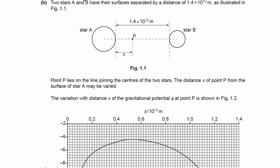Part B. Two stars, A and B, have their surfaces separated by a distance of 1.4 times 10 to the 12, as shown in the diagram. We have a point P which lies on the line joining the centers of the two stars. The distance x of point P from the surface of star A may be varied — so basically we're moving point P along the line between the centers of the two stars.